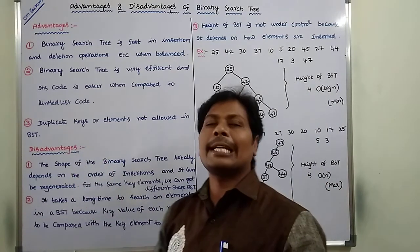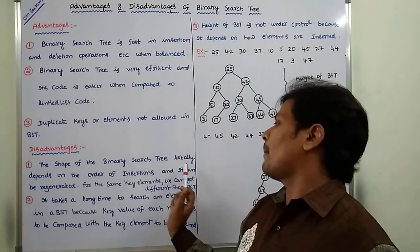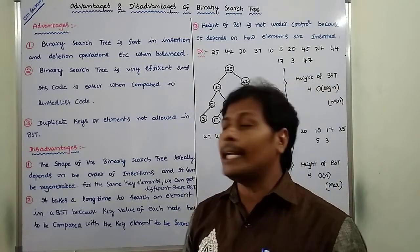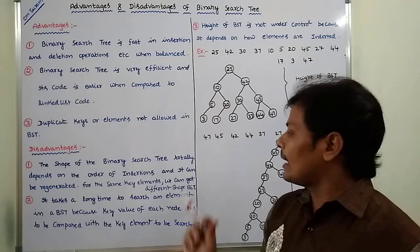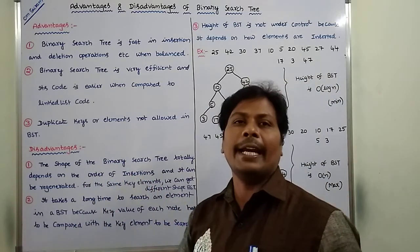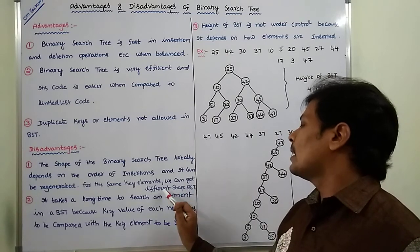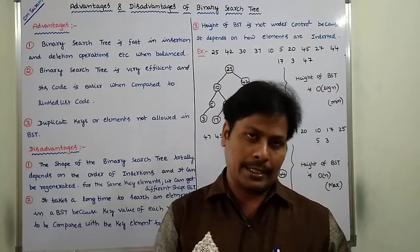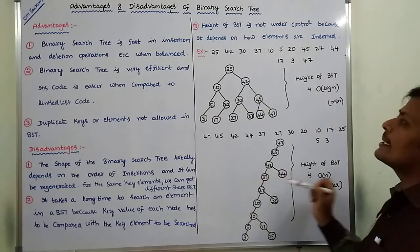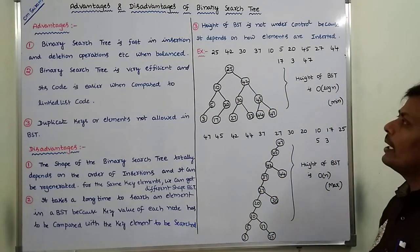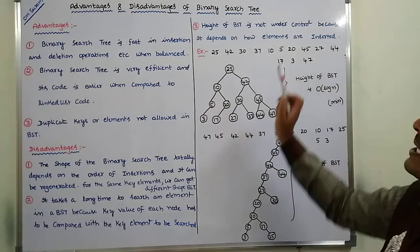Coming to the disadvantages. First one: the shape of the binary search tree totally depends on the order of insertions and it can be regenerated. For the same key elements, we can get different shape BSTs. Now we have considered this example — there are 13 elements.